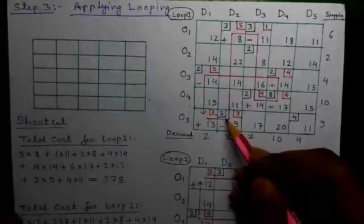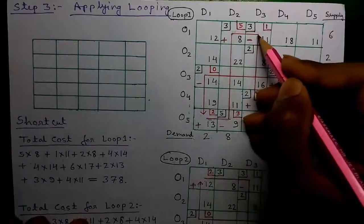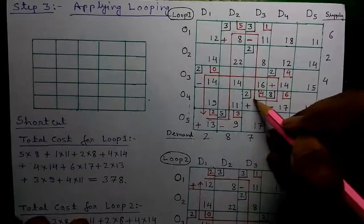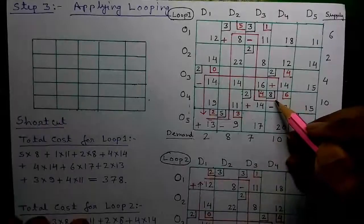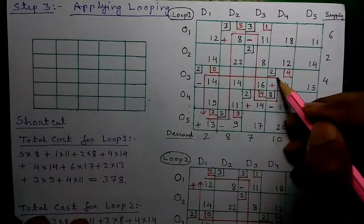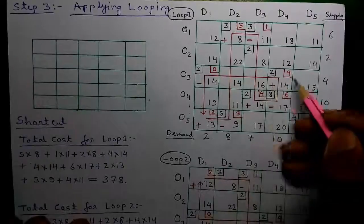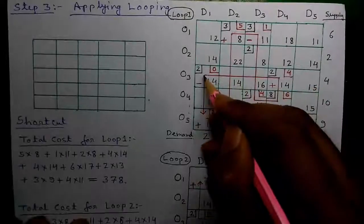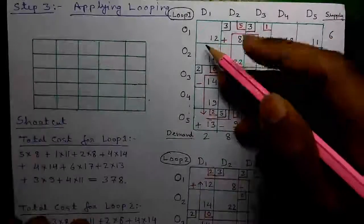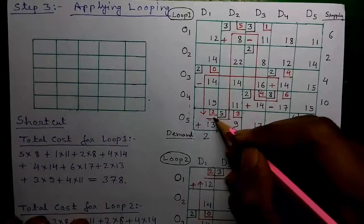Drawing the loop: starting from the originating cell, go straight to an allocated cell and take a bend upward; next, at the next allocated cell, take a bend rightward; then at the next allocated cell, since there is no allocated cell forward, go downward. Continue to the next allocation cell, take a bend, then move upward again. At another allocated cell, take a bend, and eventually come downward back to the originating cell. The loop must be a closed loop — the starting and ending cell must be the same.